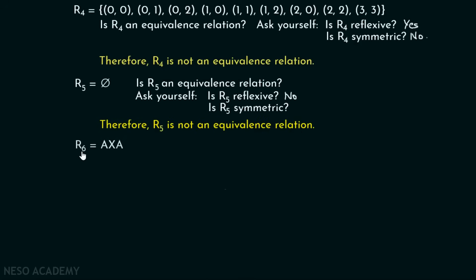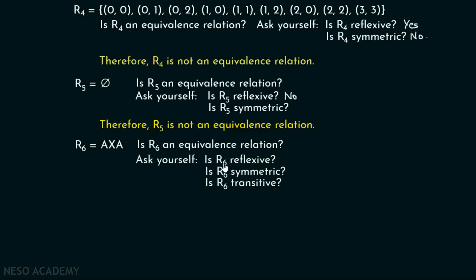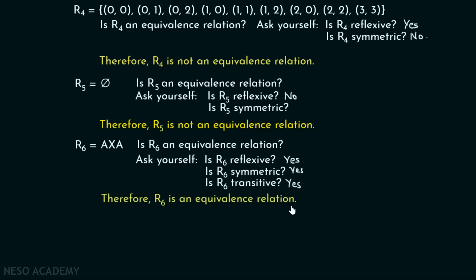Now let's see relation R6, which is A × A. Is R6 an equivalence relation? A × A is the largest possible relation — it includes every ordered pair. Therefore, this relation must be reflexive, symmetric, and transitive. So R6 is an equivalence relation.